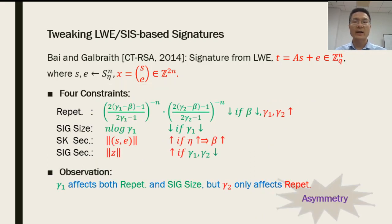Now, the expected number of repetitions is dominated by two parts. Specifically, we can reduce it by either increasing gamma1 or gamma2. Note that the signature size is also dominated by gamma1, but is irrelevant to gamma2. This asymmetric feature allows us to use a smaller gamma1 for smaller signature size, but a larger gamma2 for maintaining the expected number of repetitions.